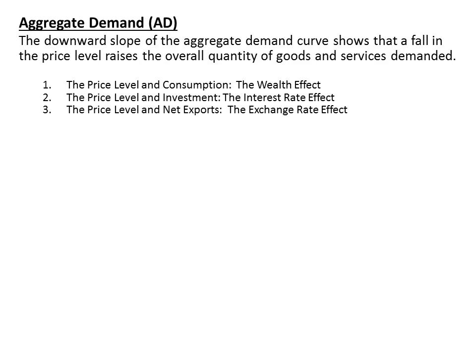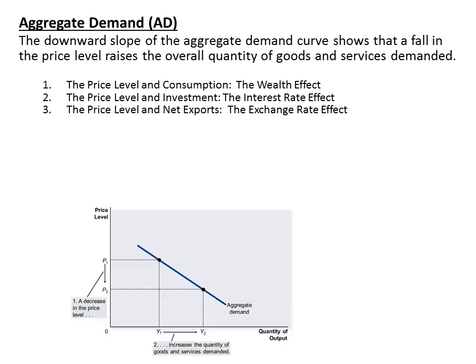Let's analyze first the aggregate demand. There is a downward sloping relationship between prices and the quantity produced, as we can see in the diagram. When we decrease the price, there is an increase in the quantity demanded. This should not be confused with the microeconomic view of demand, which is mostly explained by the substitution effect. In macroeconomics, the negative relationship is explained by three factors: the wealth effect, the interest rate effect, and the exchange rate effect.